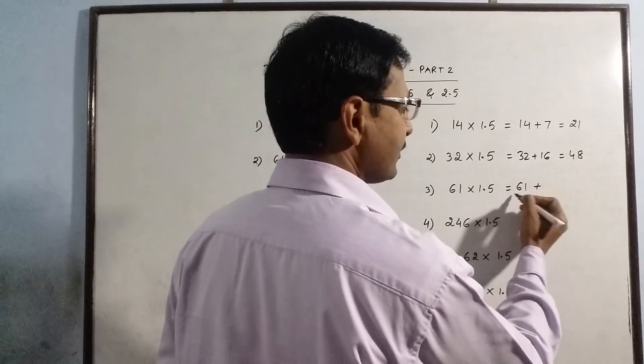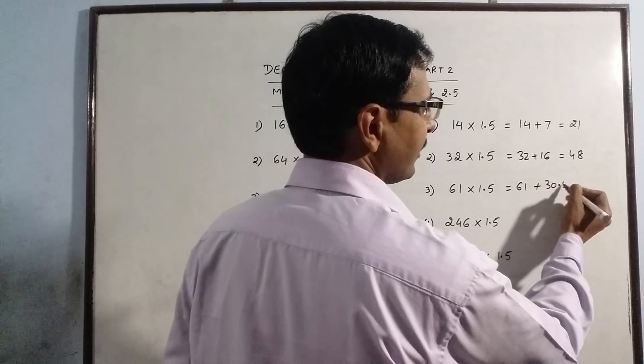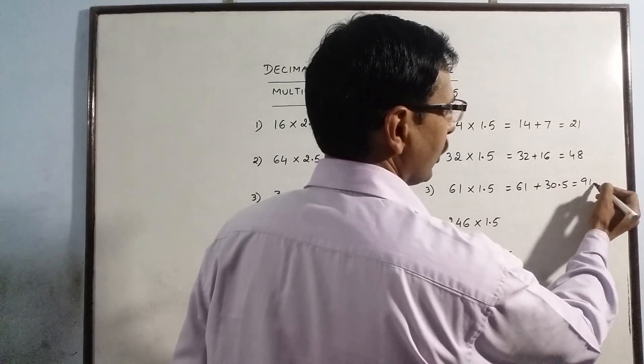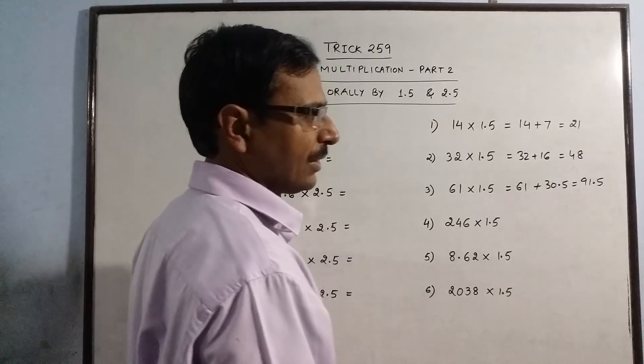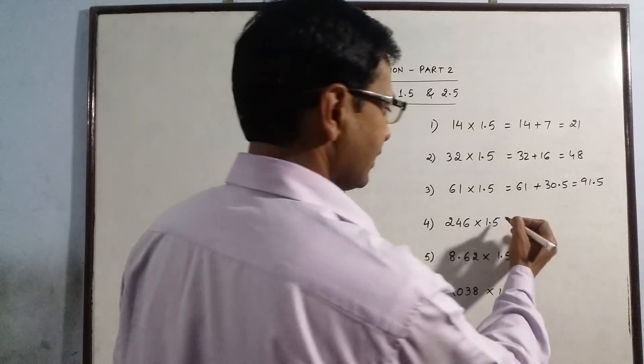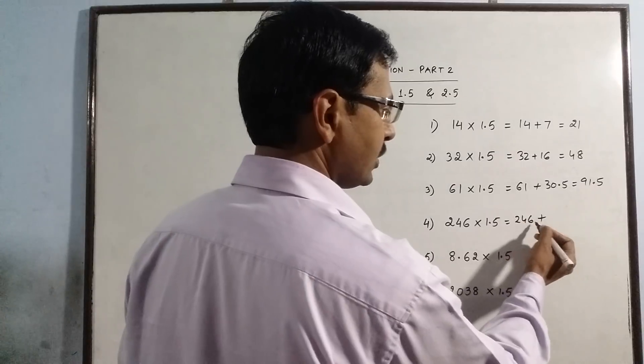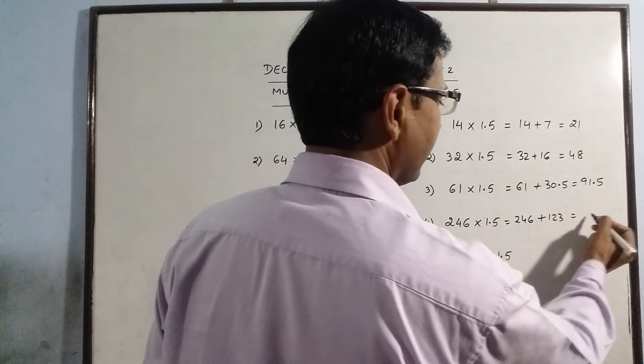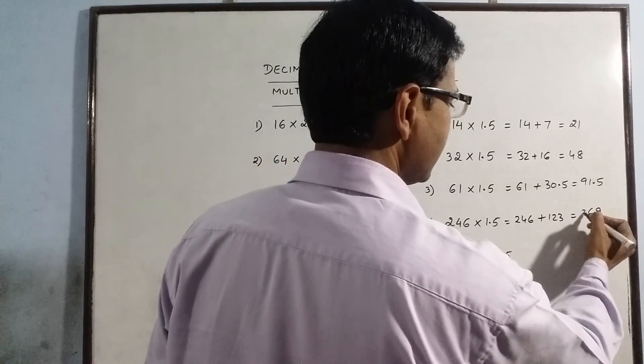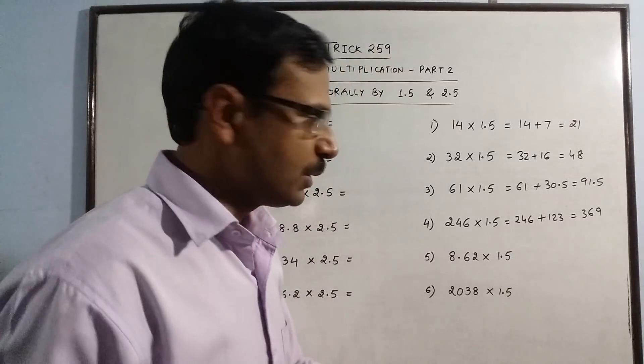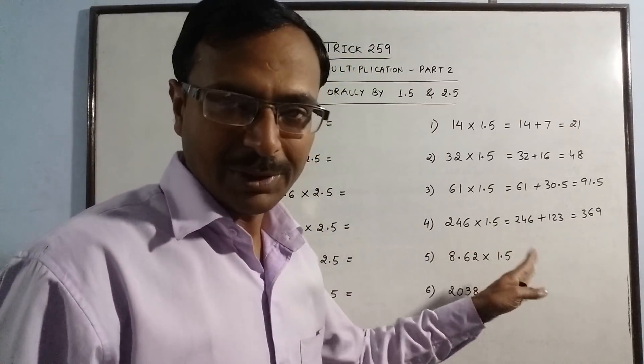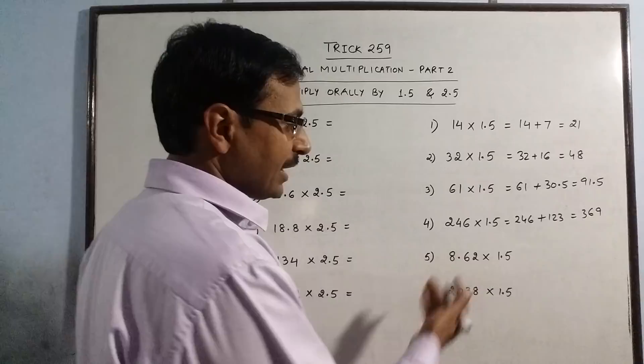61 times 1.5: what is half of 61, which is 30.5? Your answer is 91.5. 246: if you half this, 1-2-3, now add them 9-6-3. 369 is the product of 246 and 1.5.